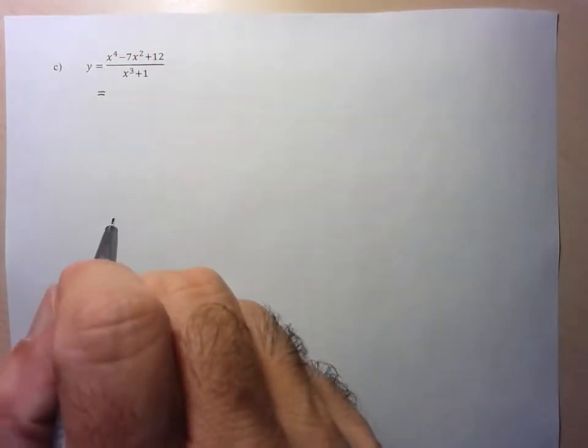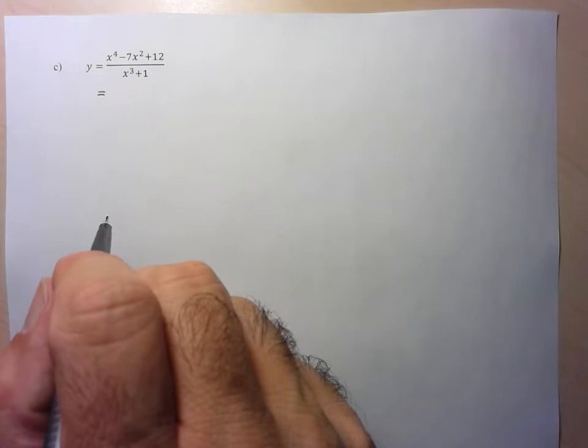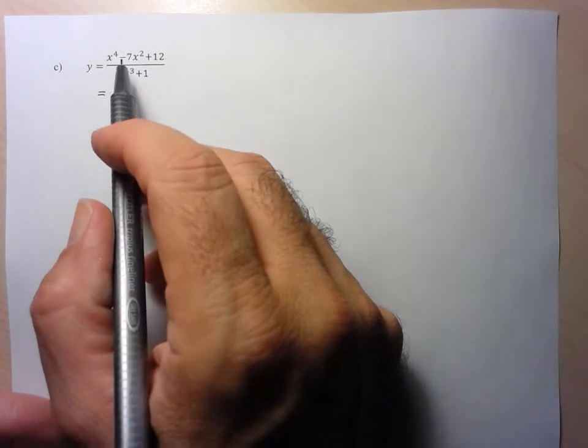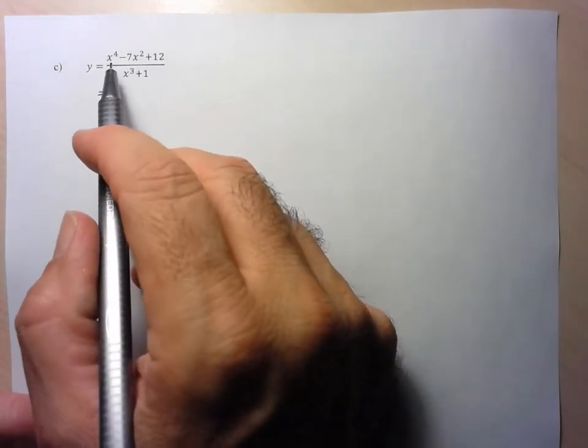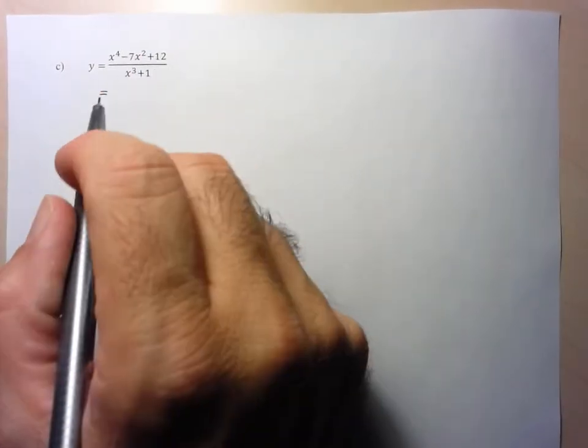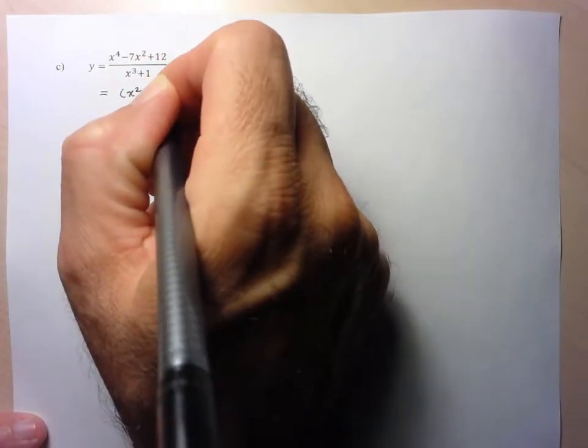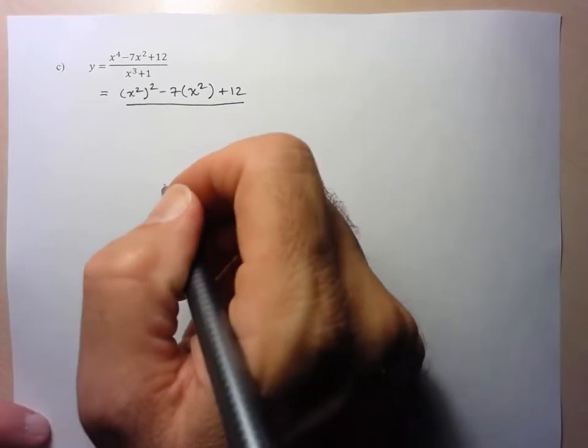So the first thing we have to do is see if there's any simplification, and also in doing the simplification we factor — and that helps us determine x-intercepts and vertical asymptotes. So again, before you run and try to use the factor theorem, I hope you notice here that we've got a trinomial that we can factor using traditional methods and here we have a sum of cubes. So here I'm going to rewrite this as x-squared squared minus 7 times x-squared, treating this as a variable, plus 12.